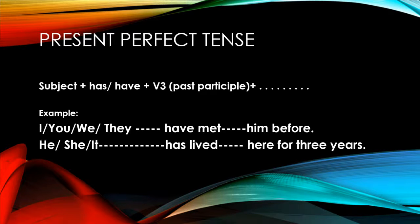The structure is: subject first, then we add 'has' or 'have' according to the subject. If it is singular, we use 'has'; if plural, we use 'have'. Then we place the verb in the past participle form, which is V3, as I mentioned in previous videos, and then the rest of the sentence.